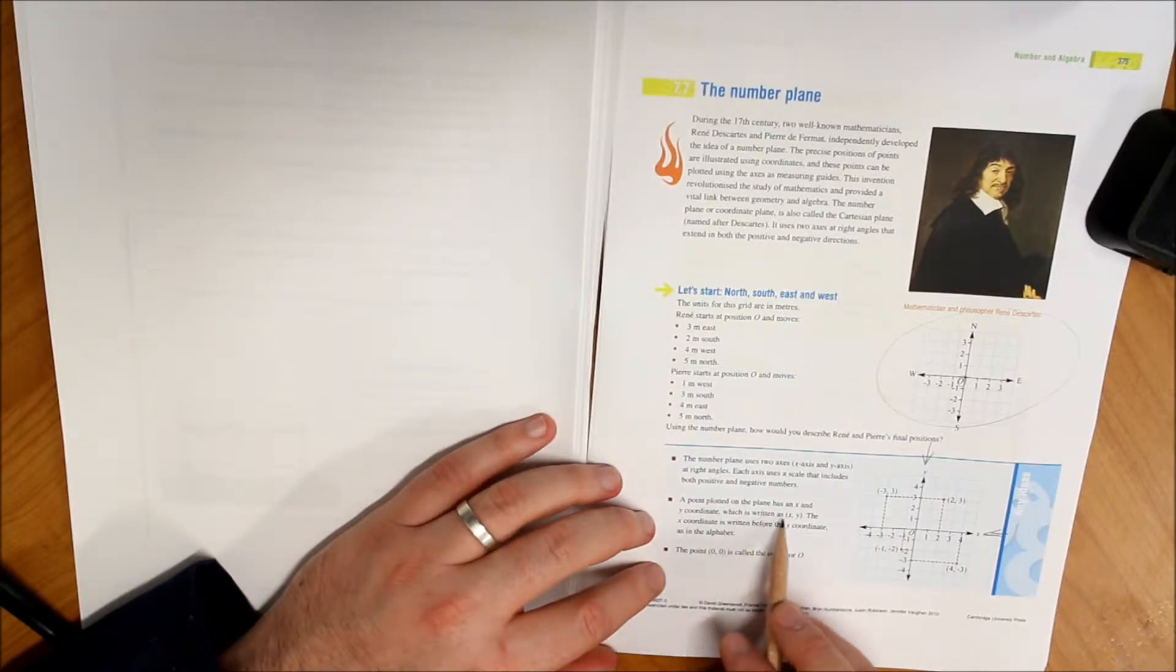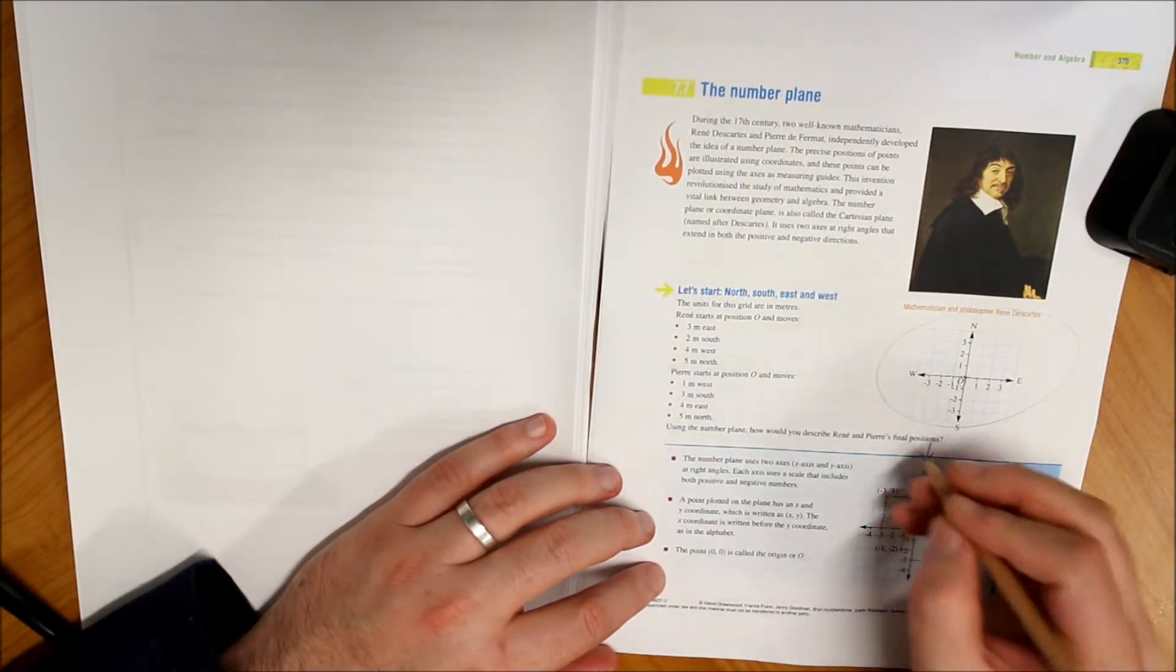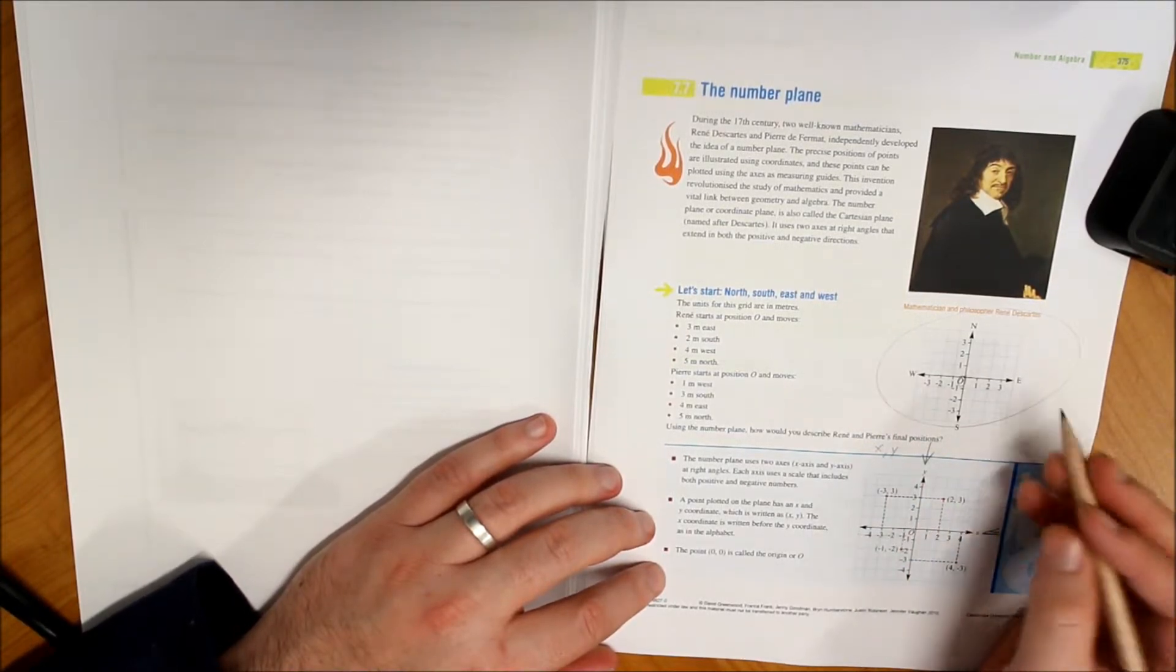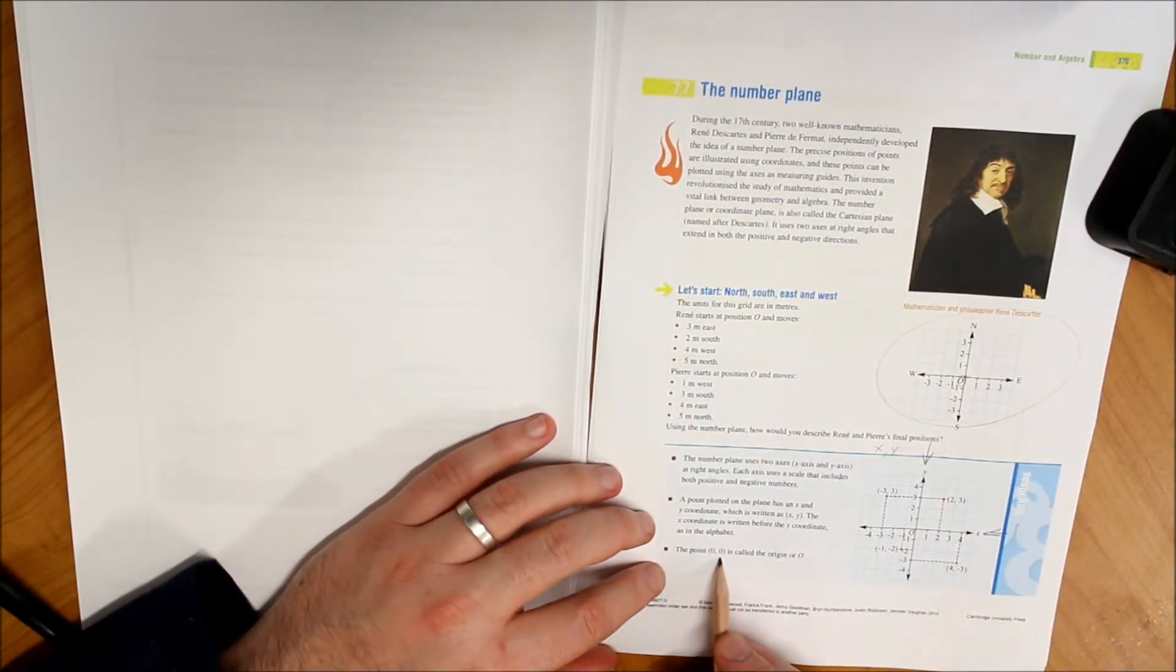A point plotted on the plane has an x and a y coordinate, which is written as x and then y. The x coordinate is written before the y coordinate, as in the alphabet—so x comes before y. The point (0, 0) is called the origin, or simply O.